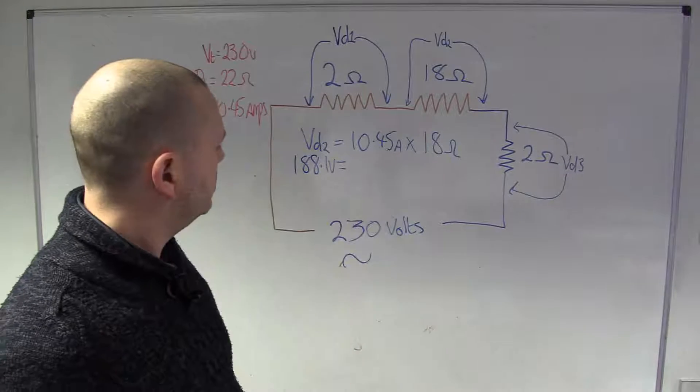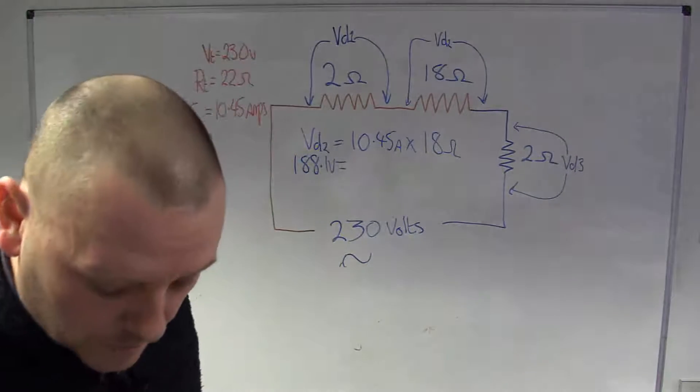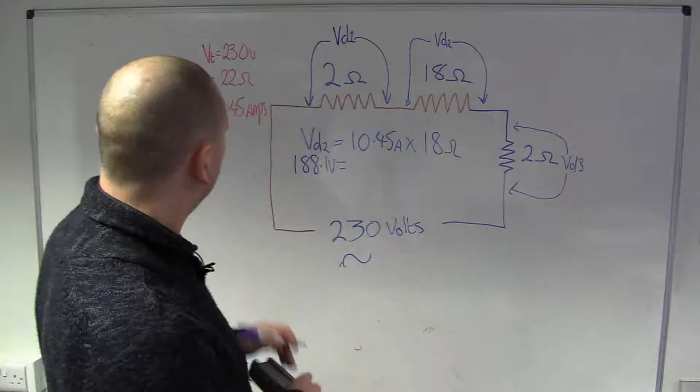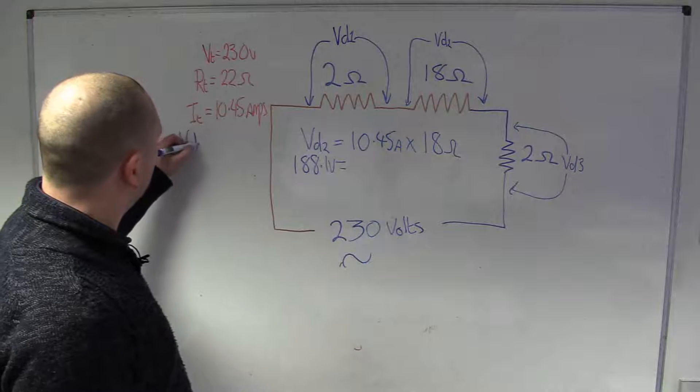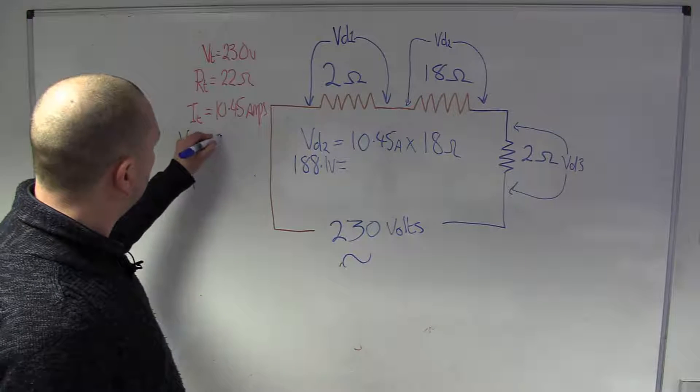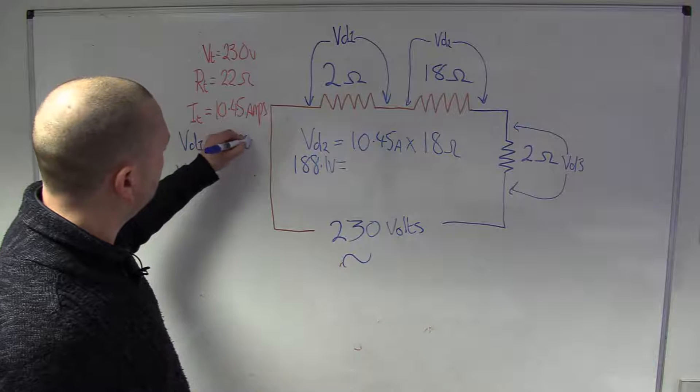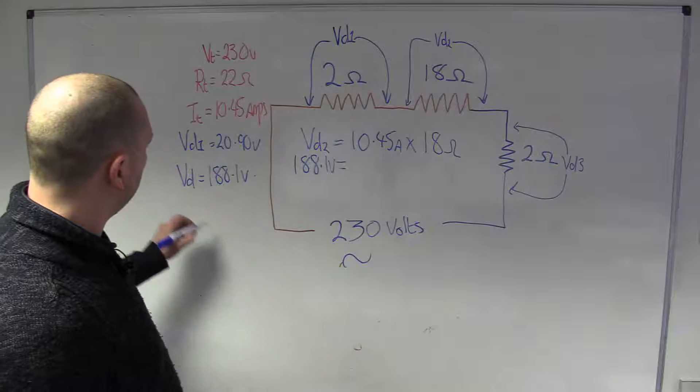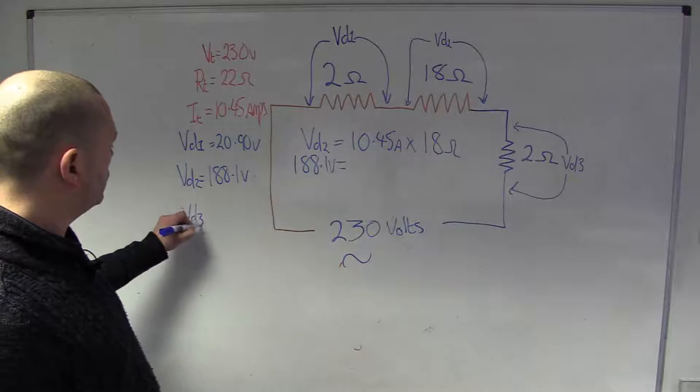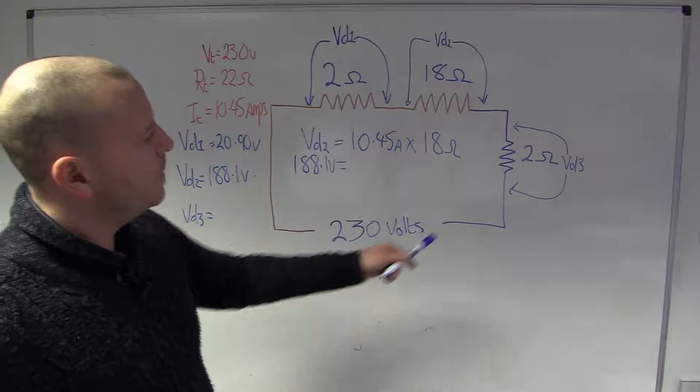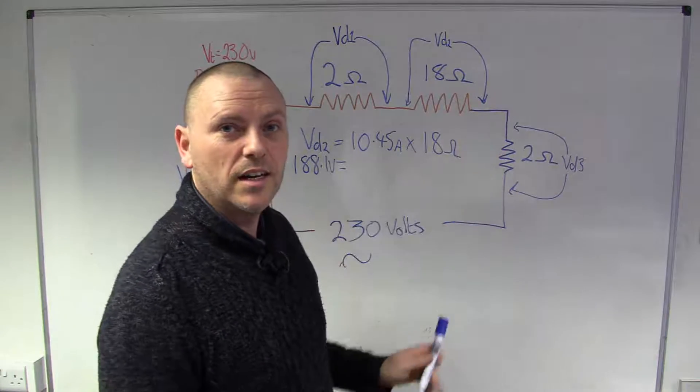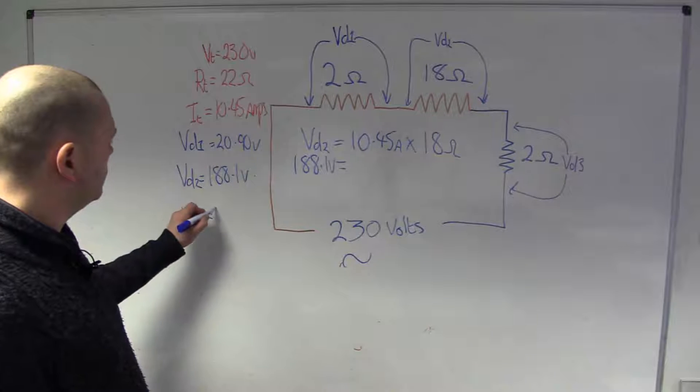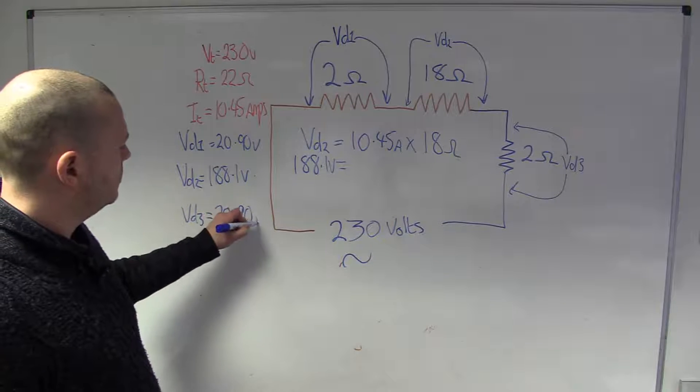So, that's quite substantial really, isn't it? Let's do the final one. We're writing them down here. 20.90 Volts. 188.1 Volts. Number 2. And volt drop 3. Well, it's the same resistance and we've got the same current. So, it's going to be the same as the first one. So, 20.90 Volts.